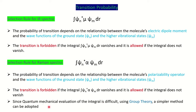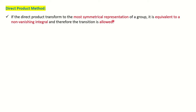The question is how to find out, because this integration is evaluated by quantum mechanical methods and it is very difficult to calculate in which condition it gives zero or non-zero. Here comes an easy method under group theory called the direct product method. By using this method we can find out that if the direct product gives the most symmetrical representation of a group, then it is equivalent to the non-vanishing integral, meaning the transition will be allowed.